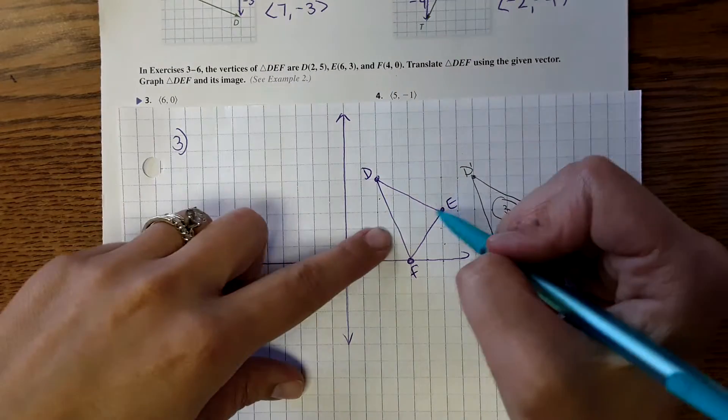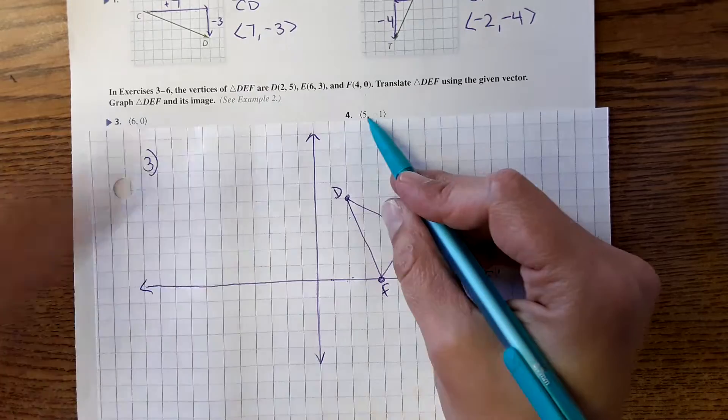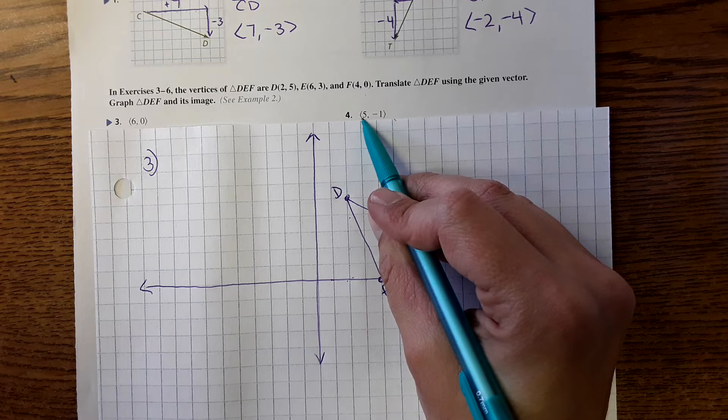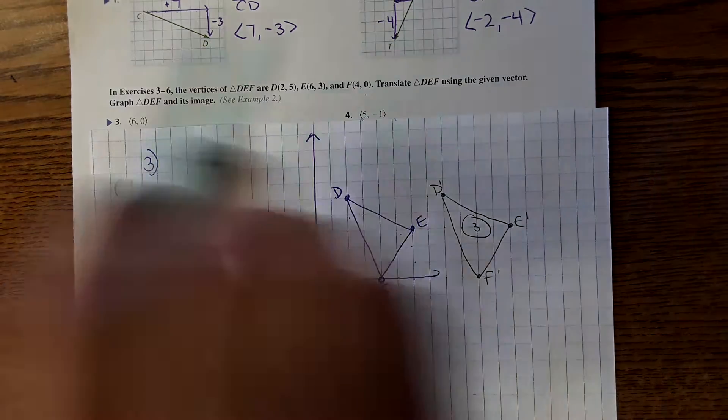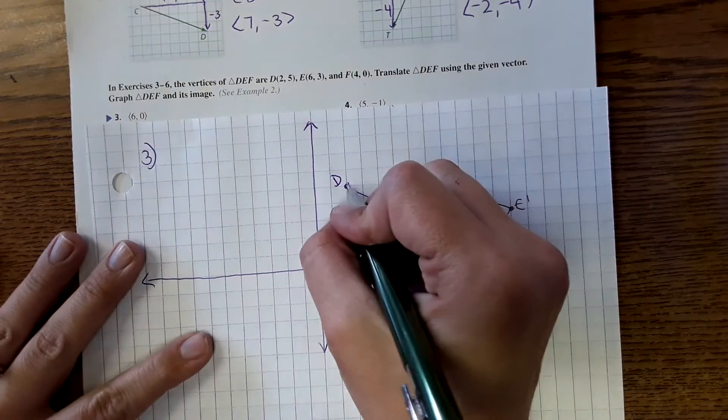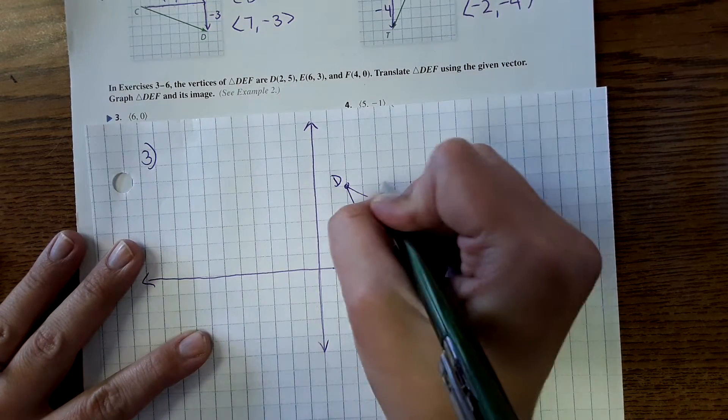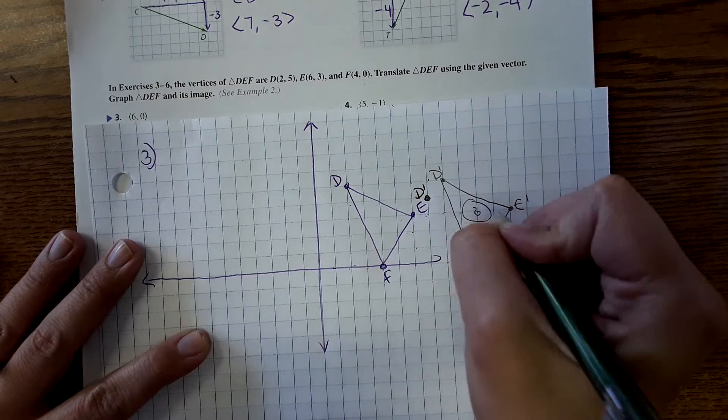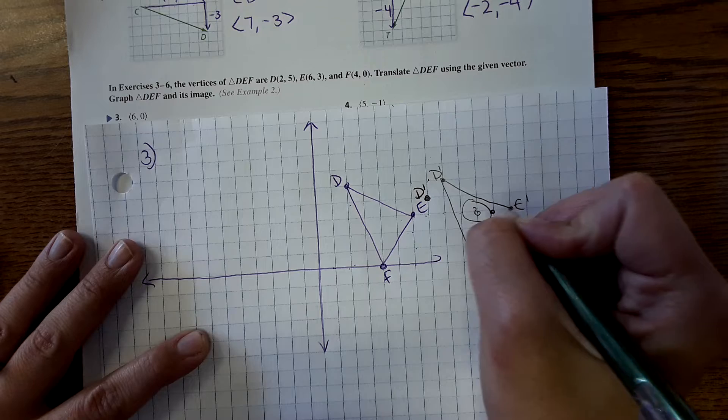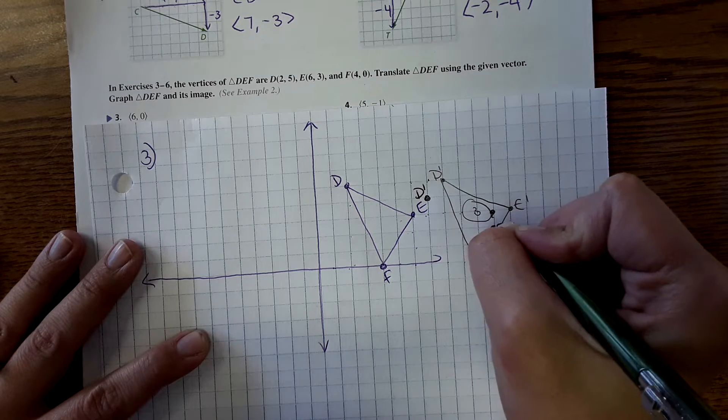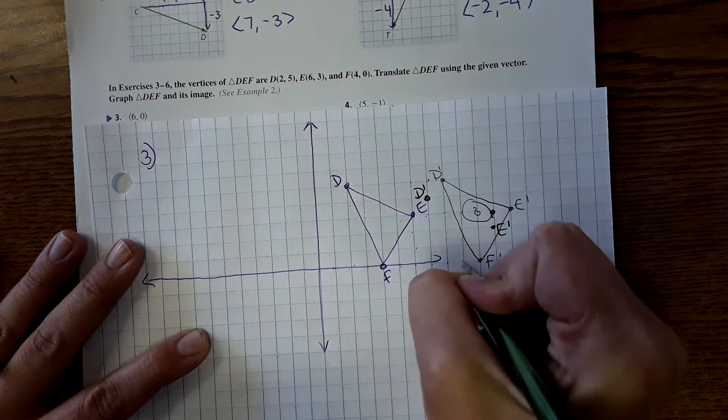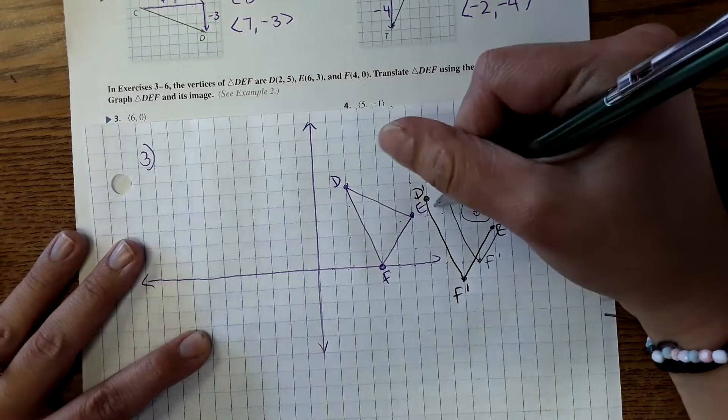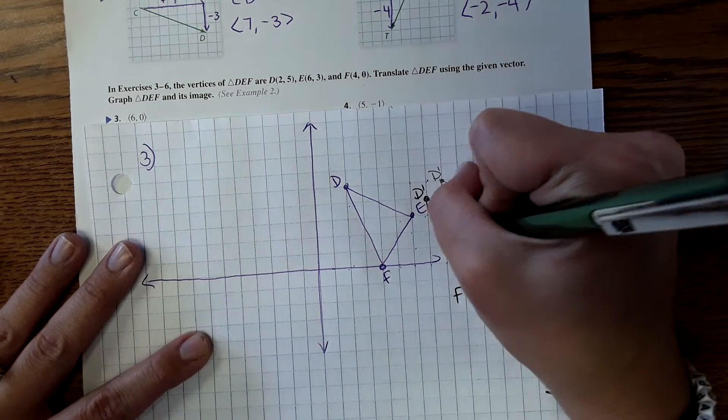Now, for the next one, we're taking the same shape, and we're just translating it a different way. So here it's saying 5, negative 1, so that means it's going to go to the right 5, and then down 1. So I might use a different color or whatnot, but to the right 5, down 1. Down 1, so E prime right here. F prime. Okay, and then this would be number 4.